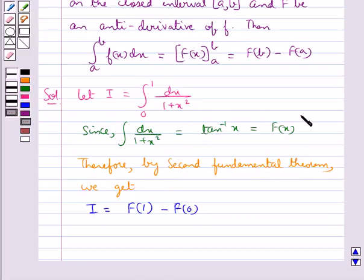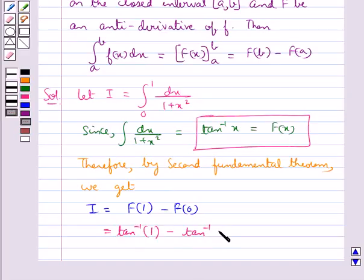Now we have F(x) equal to tan inverse x, so F of 1 would be equal to tan inverse 1 minus F of 0, that is tan inverse 0.